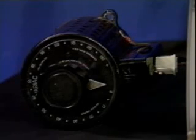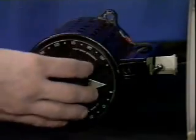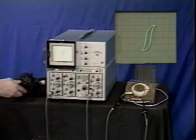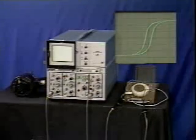We turn up the variac current. The scope shows the BH hysteresis loop typical of a magnetically soft material.